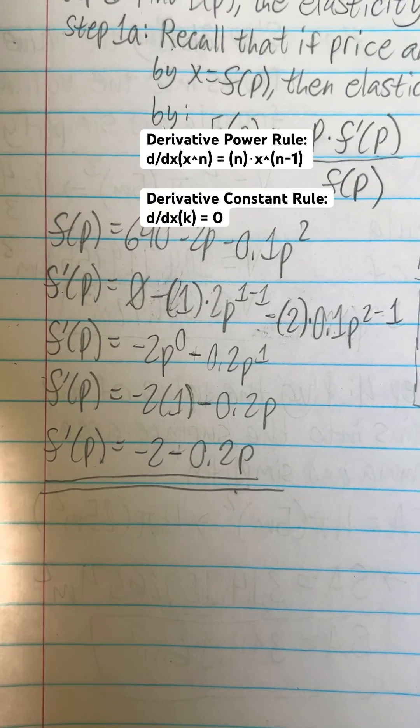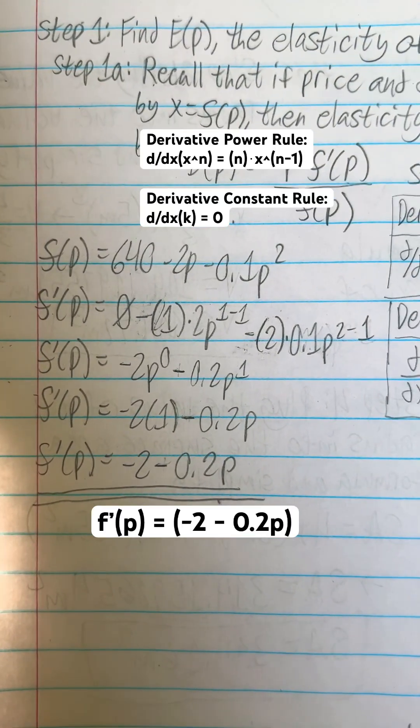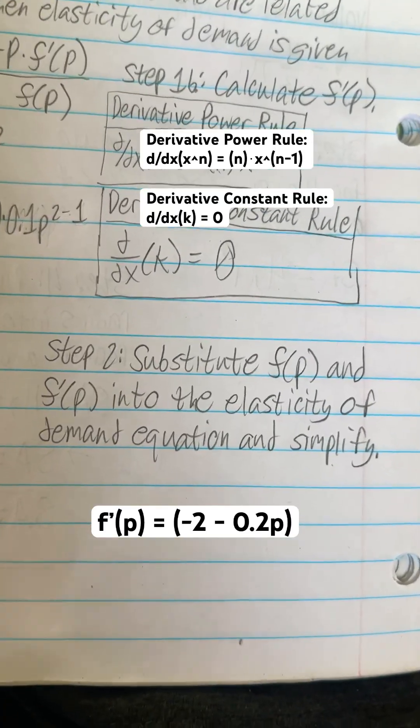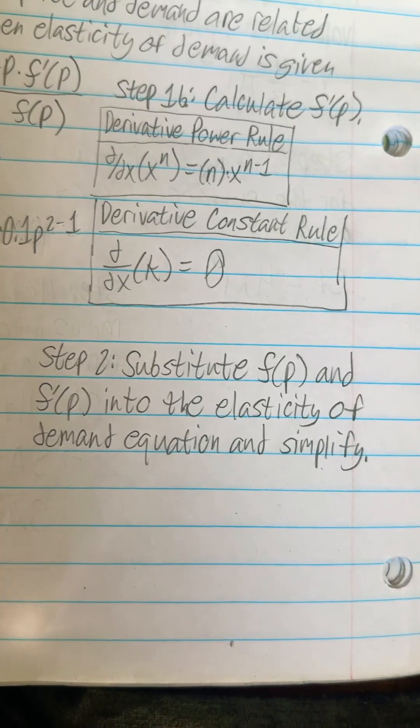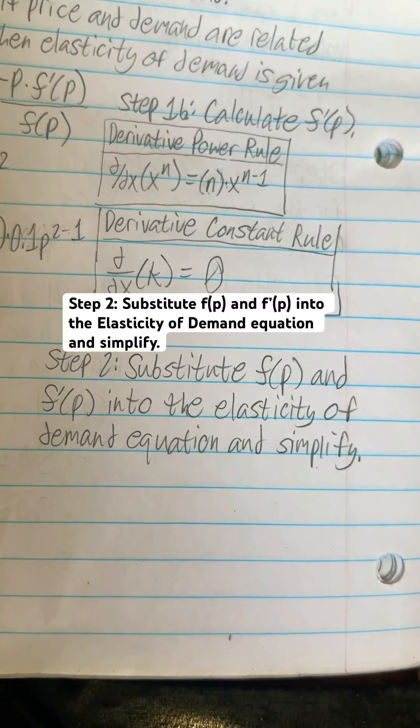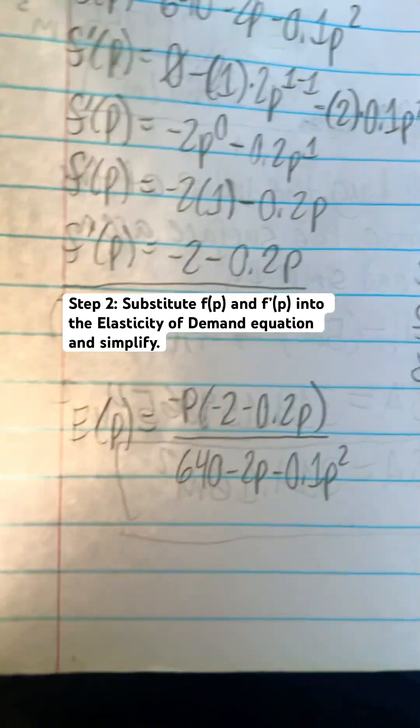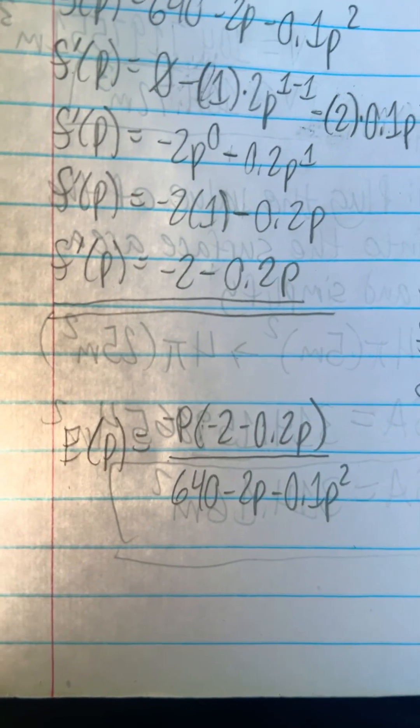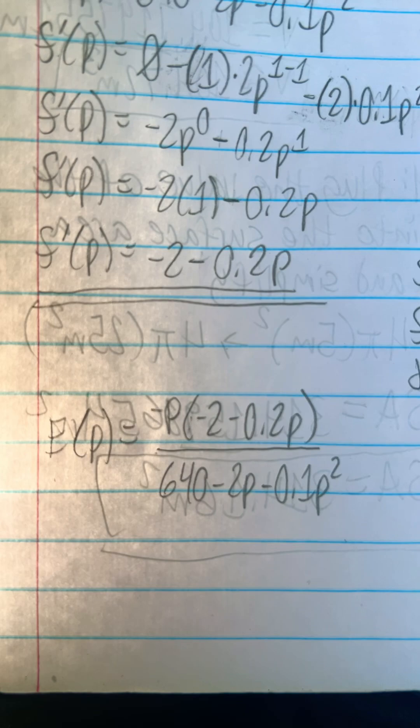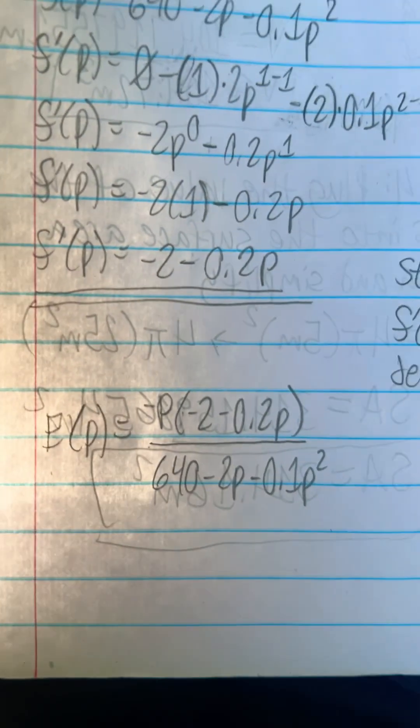And you'll get derivative of F of P is equal to negative 2 minus 0.2P. Step 2 is to substitute F of P and derivative of F of P into the elasticity of demand equation and simplify. That'll give us E of P equals negative P times negative 2 minus 0.2P divided by 640 minus 2P minus 0.1P squared.